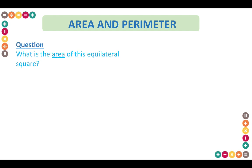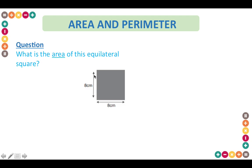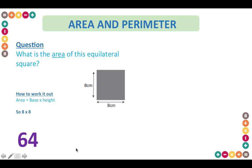Another type of question focuses on area and perimeter. Here we have a question asking you to find the area of an equilateral square — eight centimetres in height and eight centimetres in width. For a square, you should know that the area is base times height. So eight times eight gives you 64, which is the area of this square.